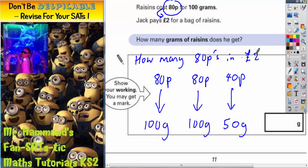So now we just need to add up our weight. So 100 plus 100 plus 50, well that's 200, plus an extra 50, is 250 grams. So your final answer is 250 grams.